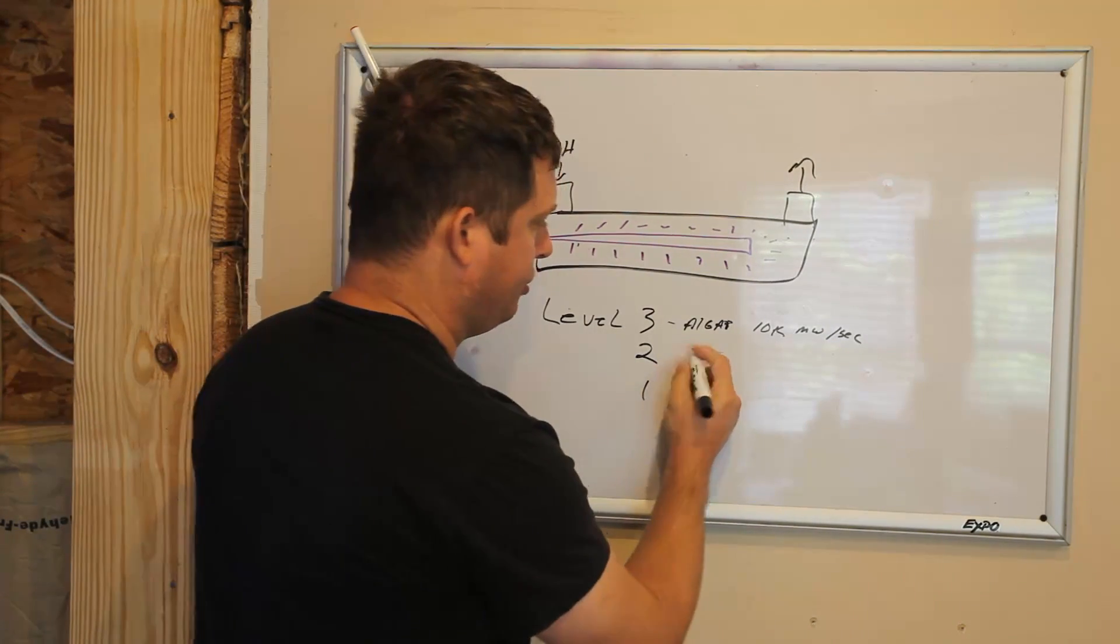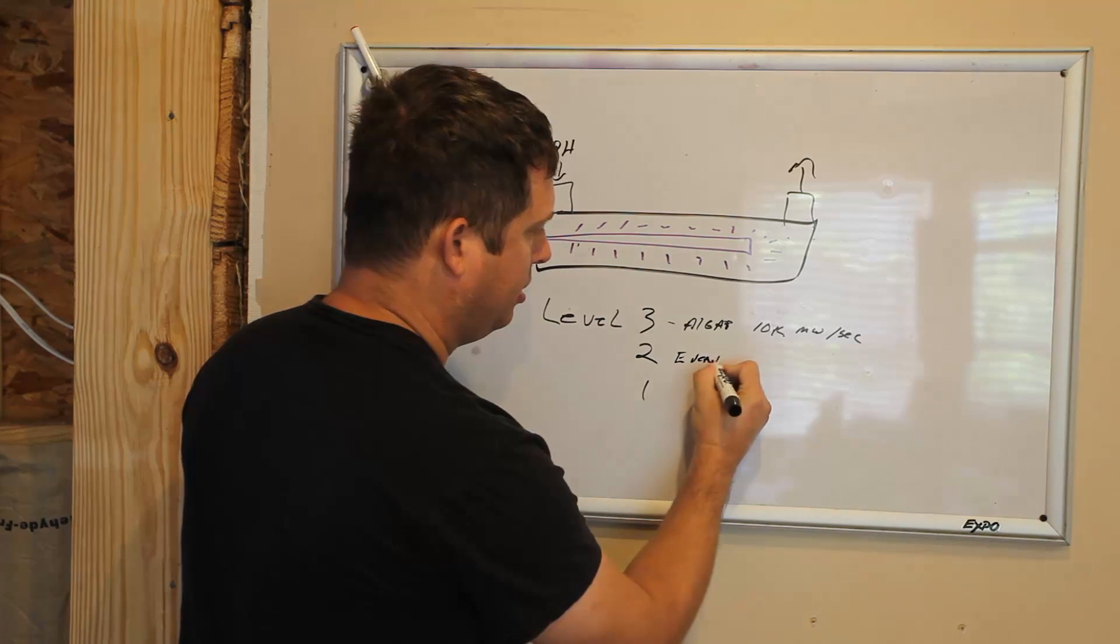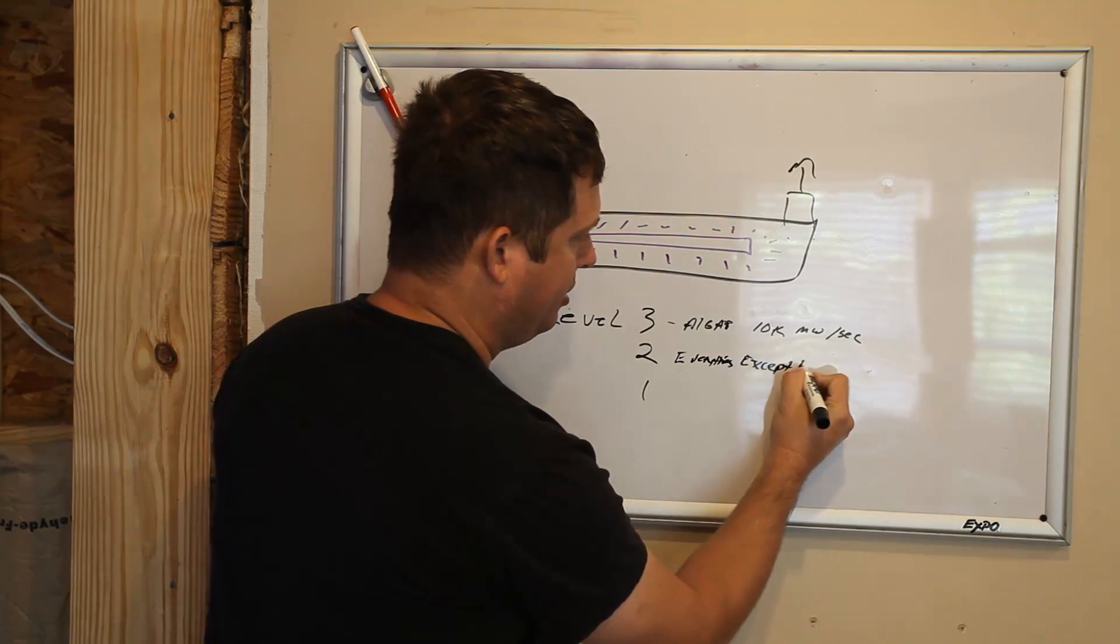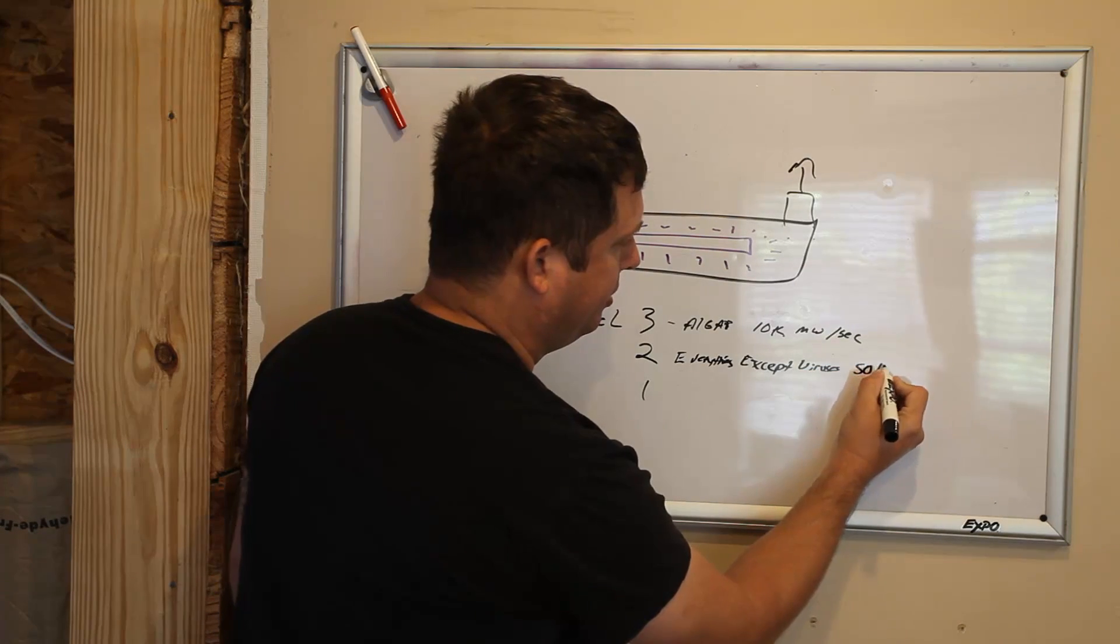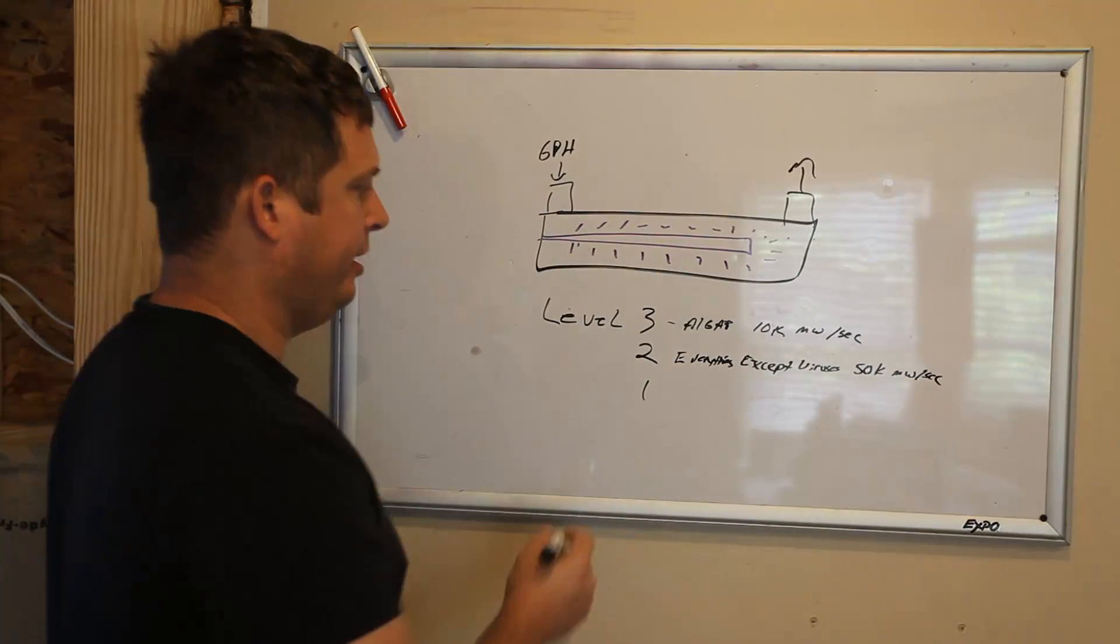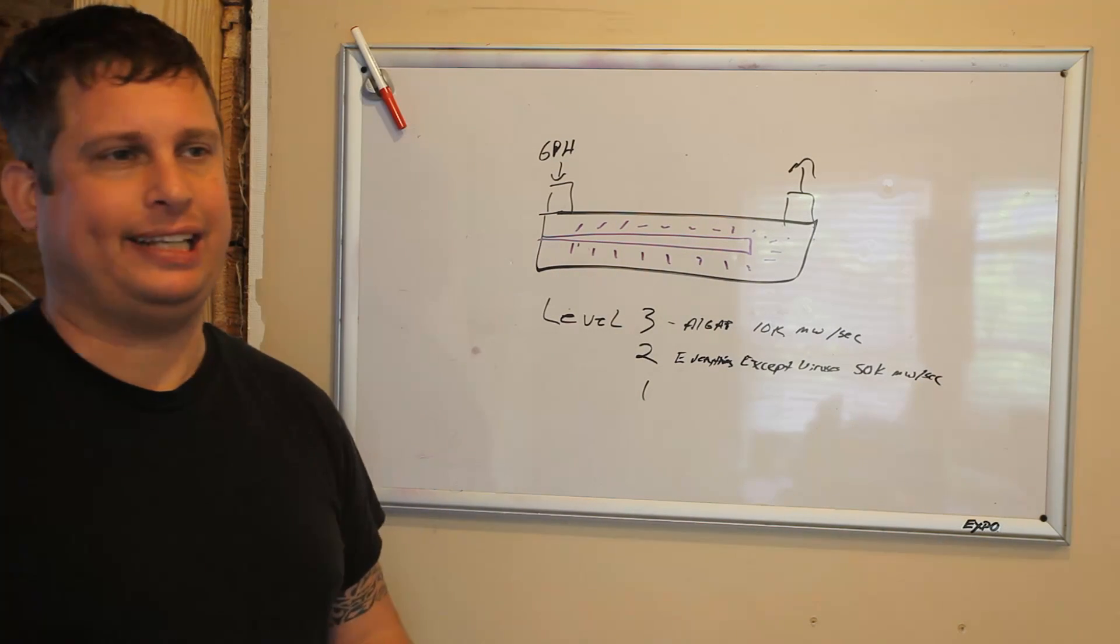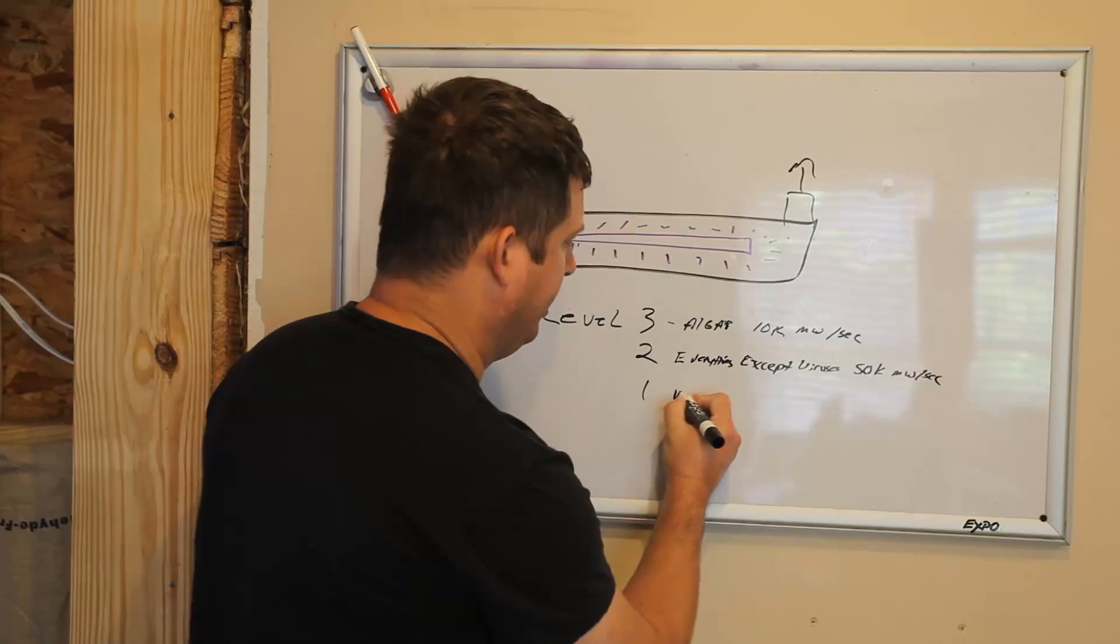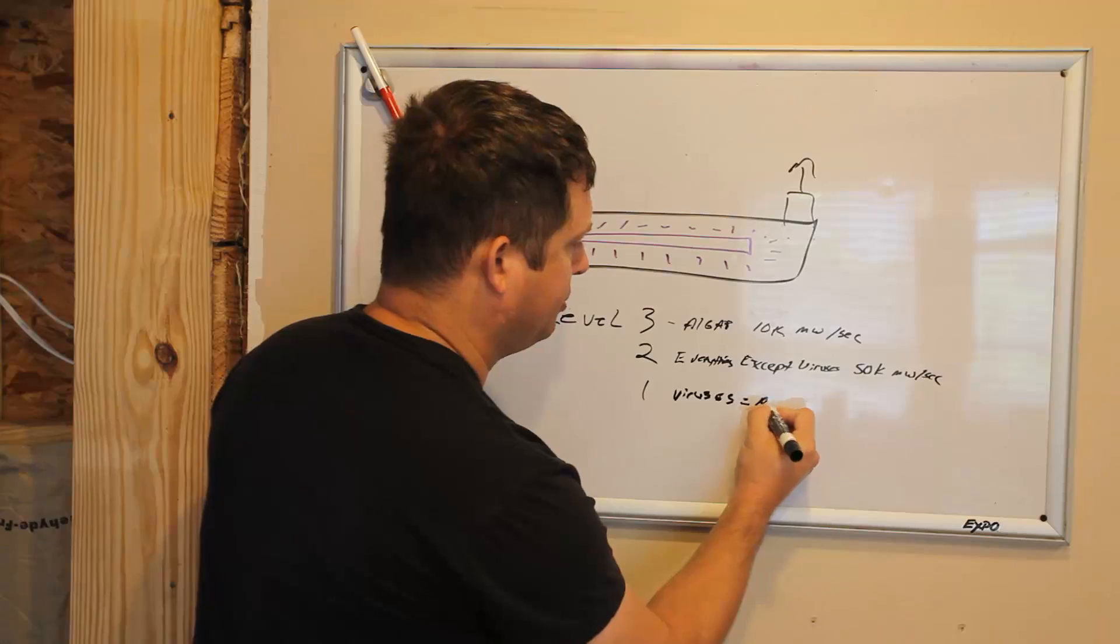To kill everything except viruses you need about 50,000 milliwatt seconds. And then if you want to kill everything, viruses are really hard to kill. Some of the viruses take 200 and 400,000 milliwatt seconds. So you just need to know that viruses equals a lot.